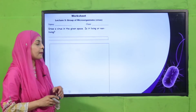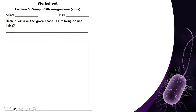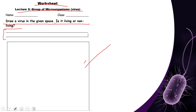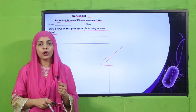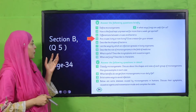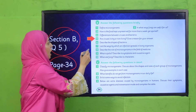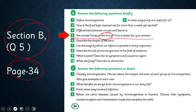Now let's move towards practice. There is a very interesting worksheet for you — Lecture number 3, Group of Microorganisms. You can simply download this worksheet from the description box below this video, or get it in print form from your teacher. Draw a virus in the given space, discuss whether it is living or non-living in two lines, and draw a shape of a virus in the box. Pause the video and complete the worksheet. Then complete Exercise B, question number 5 on page number 34: 'Are viruses living or non-living? Give a reason for your answer.' Complete it and submit it to your teacher.